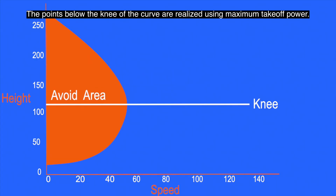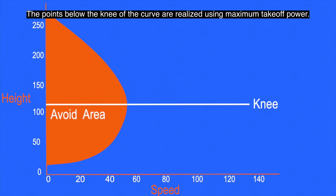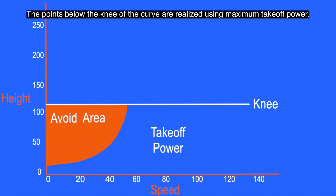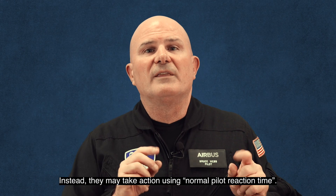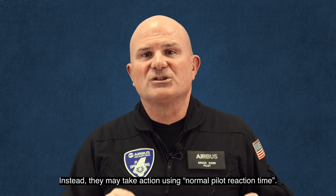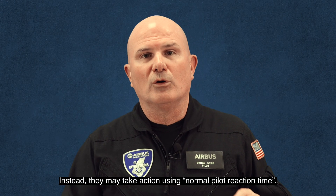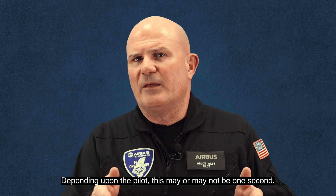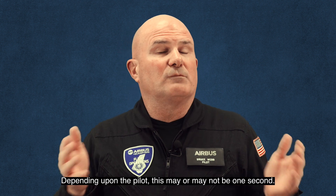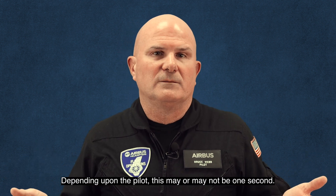The points below the knee of the curve are realized using maximum takeoff power. Here, the pilot is not required to delay their flight control inputs by one second. Instead, they may take action using normal pilot reaction time. Depending upon the pilot, this may or may not be one second.